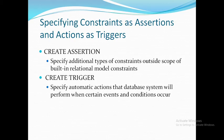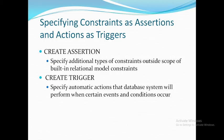Assertion specifies additional types of constraints which we are not able to write using the built-in relational model constraints. These built-in constraints include conditions on attributes or domains using check constraint, not null, unique constraints, and referential integrity constraints. Suppose you want to apply some other constraints which are not possible using these built-in ones, then we will use Assertion.